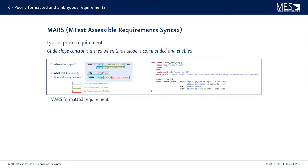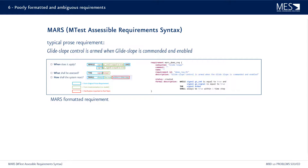MARS provides a syntax format, just like a questionnaire that you fill out: when does something apply, what shall be assessed, and how shall the system react? For the typical requirement here, we can rewrite it in MARS syntax saying: while the signal gs_command is equal to true and the signal gs_enable is equal to true, the signal armed shall always be true, for example, within one time step.